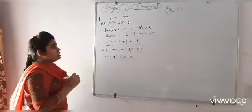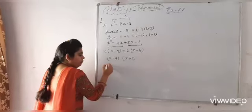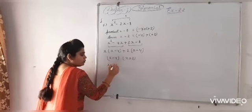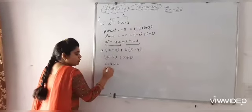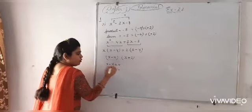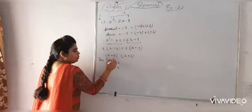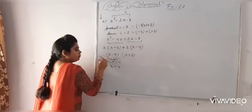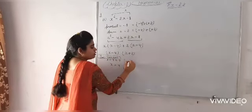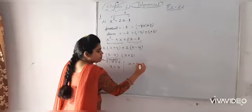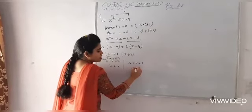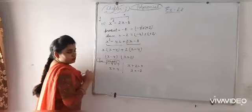And for zeros, px should equal to 0. Means x minus 4 is equal to 0, x is equal to 4. Means 4 is one zero. And for second zero, x plus 2 is equal to 0, x is equal to minus 2.